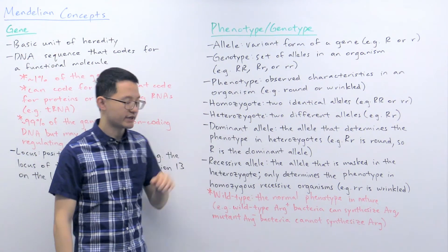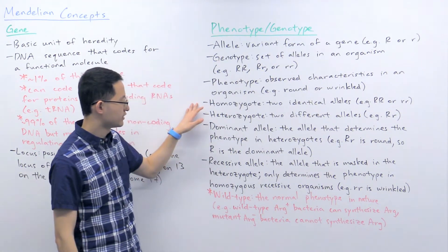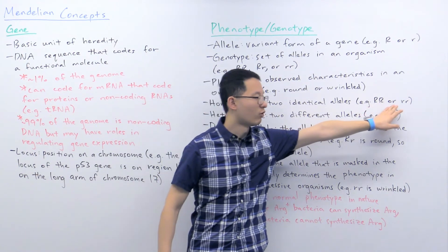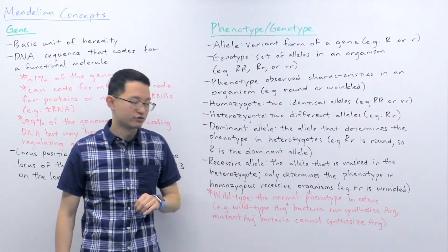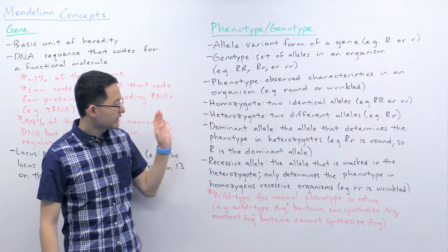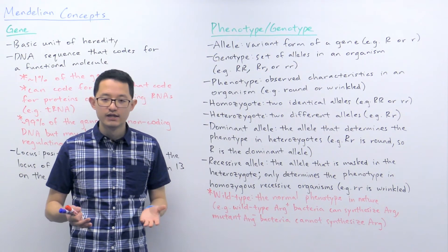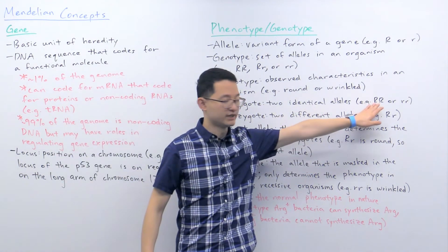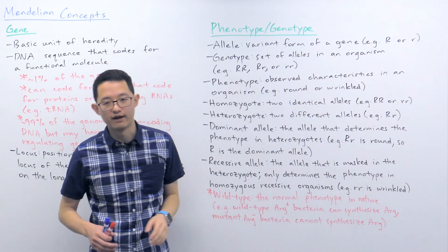We can then talk about homozygotes and heterozygotes. These are referring to the two different alleles and whether they match or not. So homozygotes are organisms with two identical alleles. This could be, for example, big R big R or little r little r. Heterozygotes are organisms with two different alleles for a gene. So that could be big R little r. When you're looking at homozygotes, the phenotype is fairly straightforward because you have two of the same alleles. So the phenotype will just be whatever alleles that organism has. So big R big R individuals will have round shapes, whereas little r little r individuals will have wrinkled shapes.